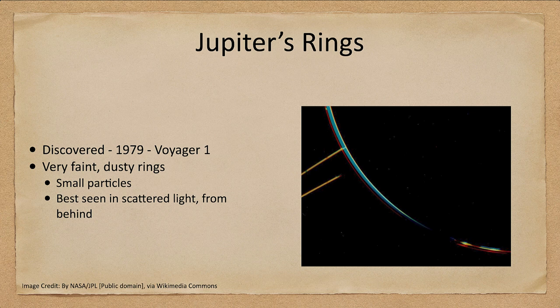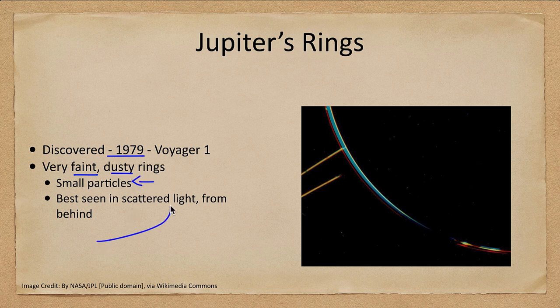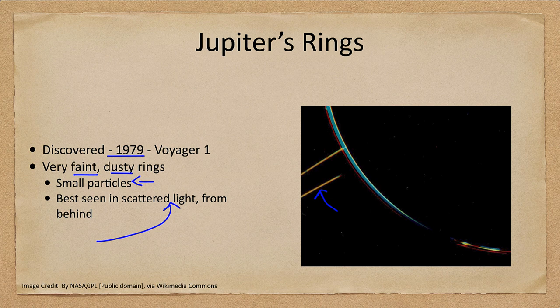Now let's look at each ring system in turn. Jupiter's rings were discovered in 1979 — they were actually the third set of rings to be discovered. By this point, we started looking for them because we'd known of rings around Saturn for a long time, and a couple of years previously we had detected rings around Uranus. These are very faint and dusty rings with small particles, and they are best seen in scattered light from behind, with the spacecraft behind Jupiter looking at the unilluminated side. Looking at it from the front, it's very hard to see.